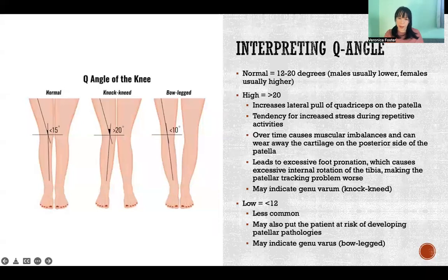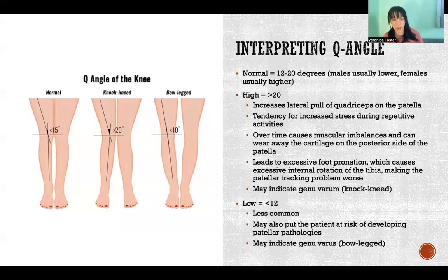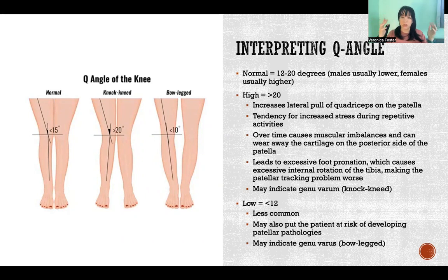So how do we interpret that measurement? It is normal for the Q angle to be between 12 and 20 degrees. Males generally have a lower Q angle, towards the bottom of that range, and females are generally towards the top of that range. That's because female pelvises tend to be a bit wider, which naturally makes the Q angle a little bit larger because that one line would be angled out further to align with the ASIS.